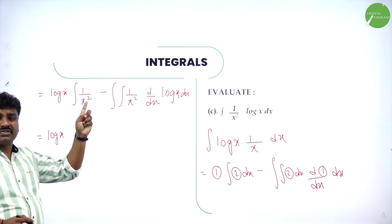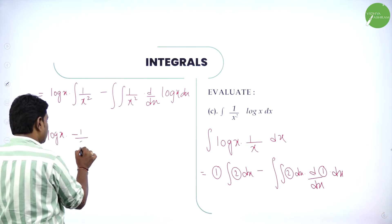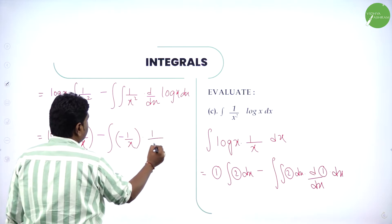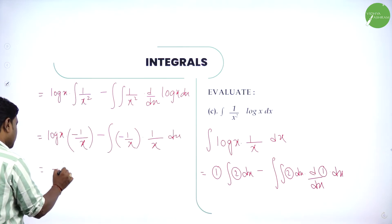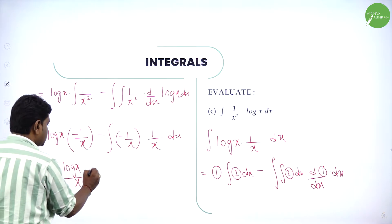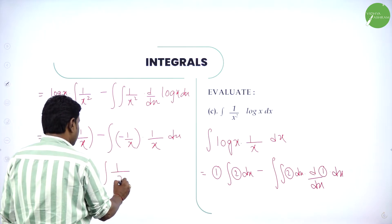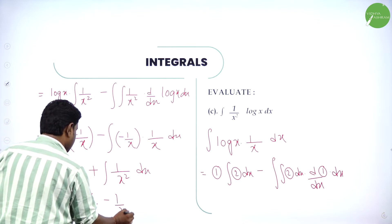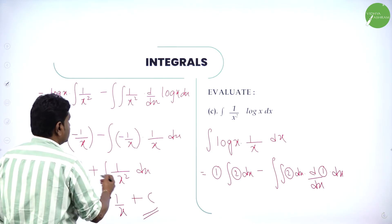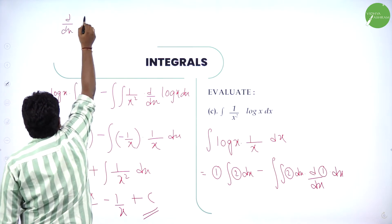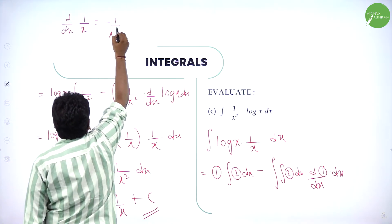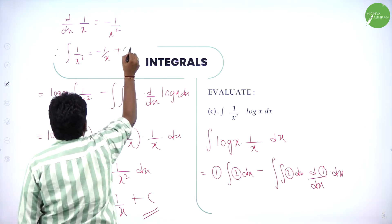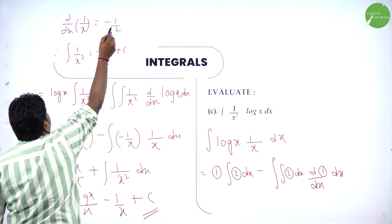Integration of 1/x² — note that derivative of 1/x is minus 1/x², so integration of 1/x² is minus 1/x. So it becomes: log(x)·(minus 1/x) minus integration of (minus 1/x)·(1/x) dx. Simplify: minus log(x)/x plus integration of 1/x² dx. That gives minus log(x)/x minus 1/x plus c.